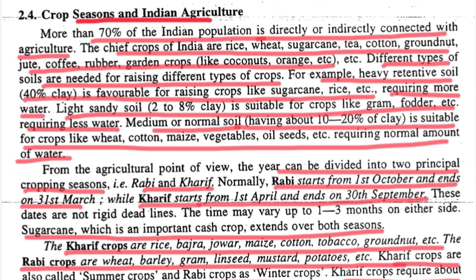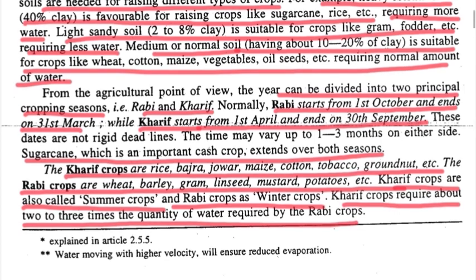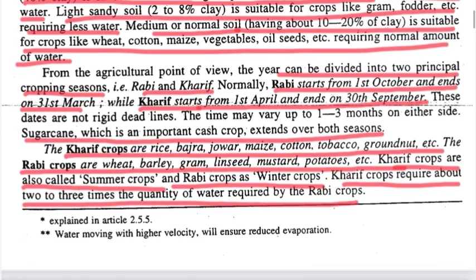For example, heavy retentive soil with 40% clay content has less water retention capacity. If you have crops like sugar and rice, you can use this type of soil when water is less. If we have light sandy soil, it would have 2-8% clay percentage.